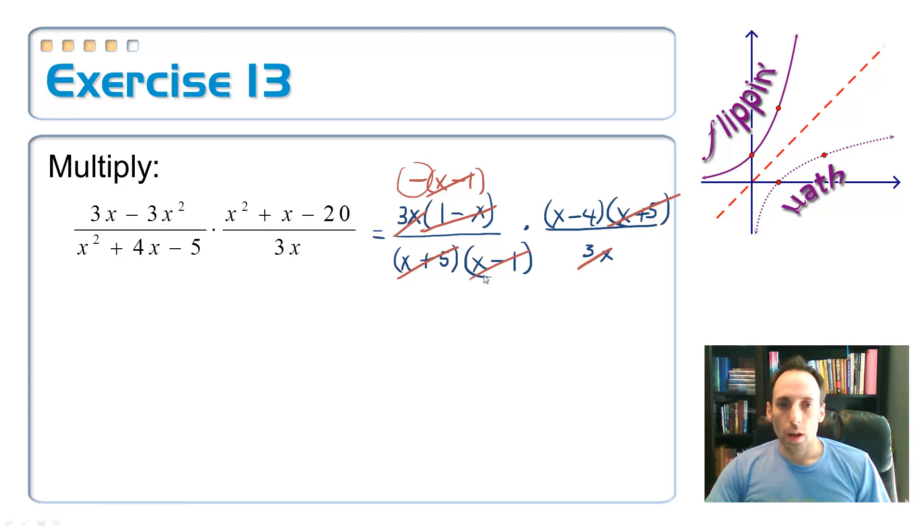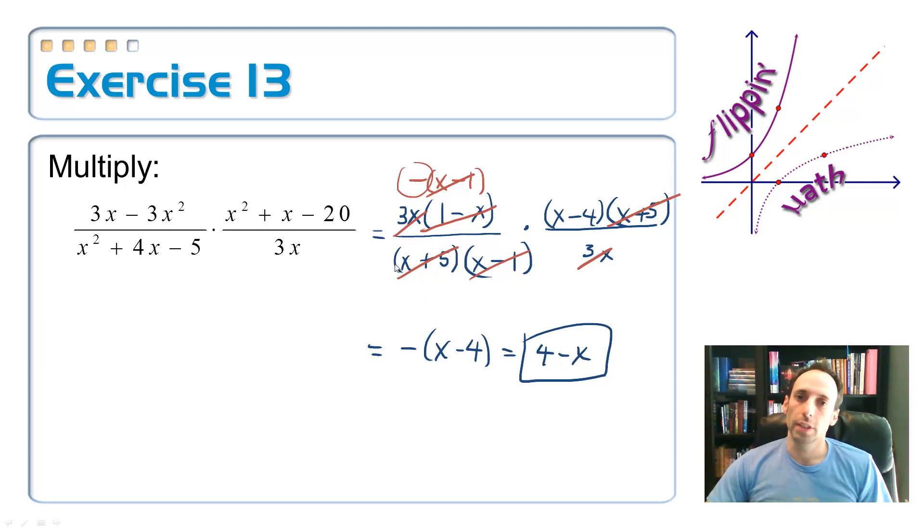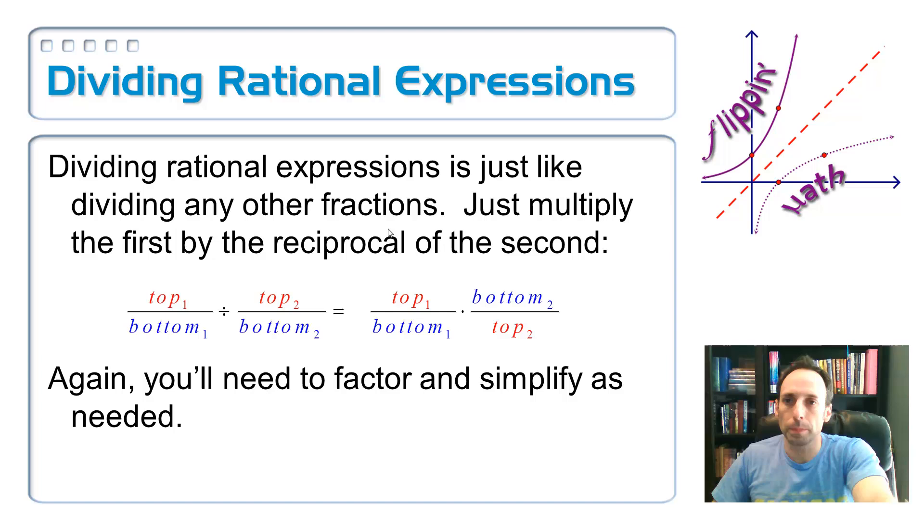Is there anything that I left uncancelled? No. So I have the negative from the first one and only x minus 4 for the last one. And you could distribute that through if you wanted to and make that 4 minus x. Isn't that crazy? Look at that complicated thing, and it turns out to be just 4 minus x. It's a little satisfying, too. So there you go.